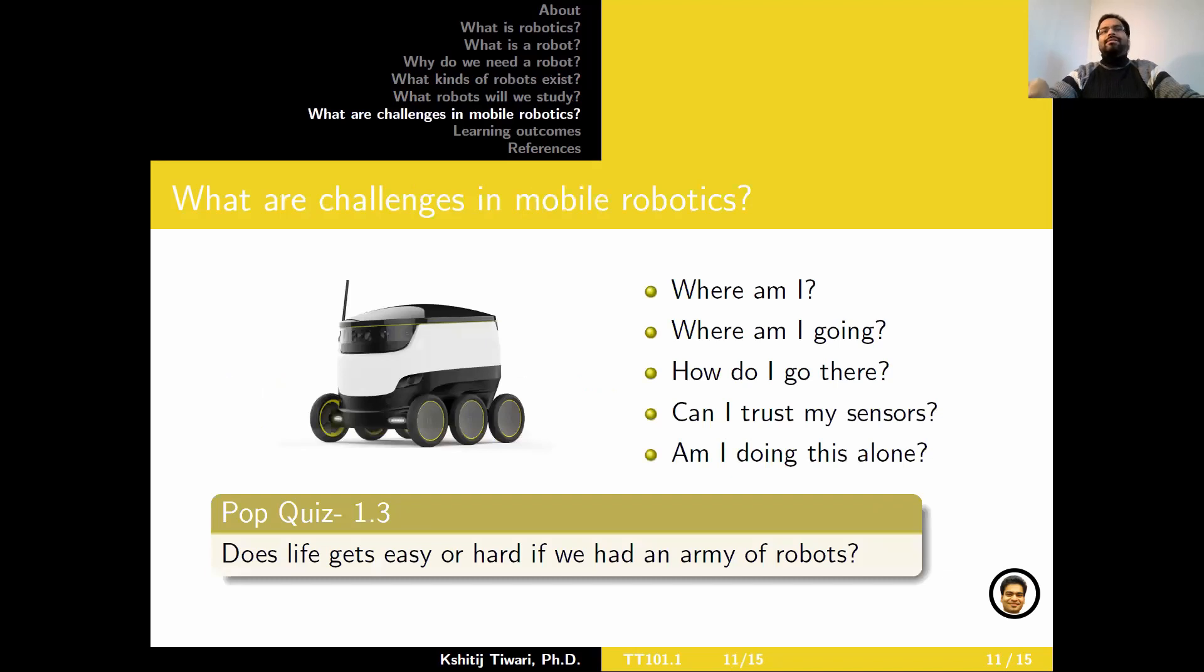So what are the challenges that one might come across when dealing with a mobile robot? A mobile robot typically needs to know the following things. Where am I? Where am I going? How do I go there? Can I trust my sensors? And if so, how much? Is there a certain percentage? Can I trust them 100%? Can I trust them 0%? Am I doing this alone? Or are there other members in the team to split the workload so you're collectively trying to accomplish a task? All of these things matter when deploying a mobile robot.